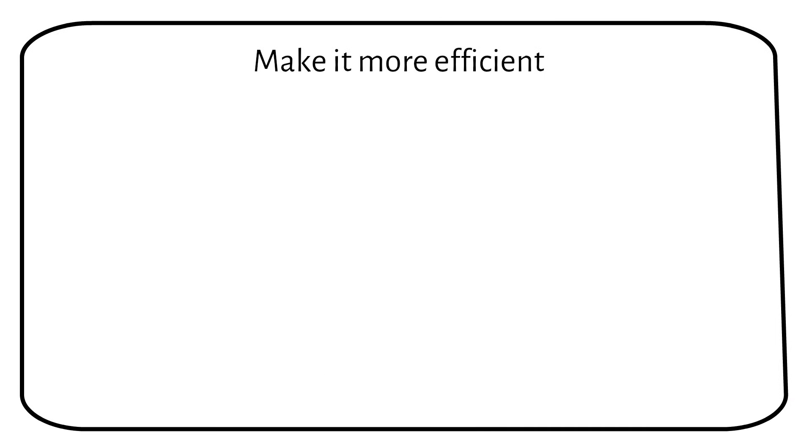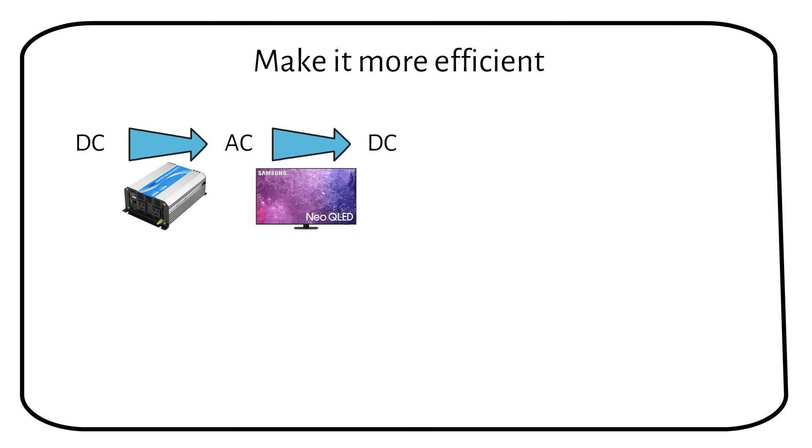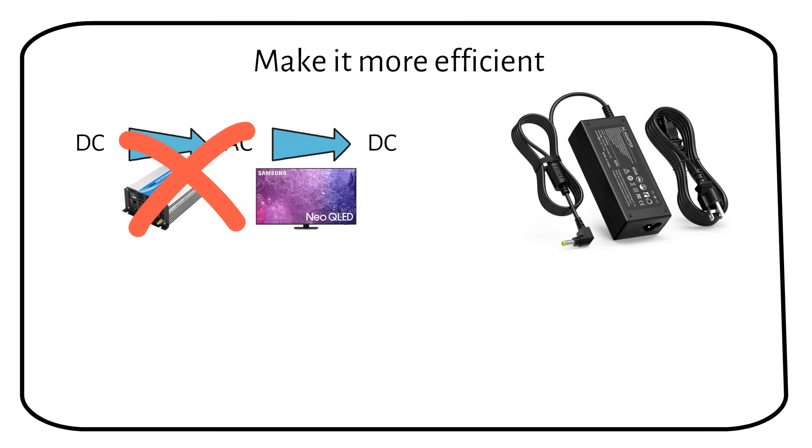How can we make this more efficient? The inverter converts the DC to AC. And the TV converts it back to DC. Not very efficient. If your TV has a power brick, you can get a DC to DC converter. Take a look at the specifications of the power brick. It will say something like this.